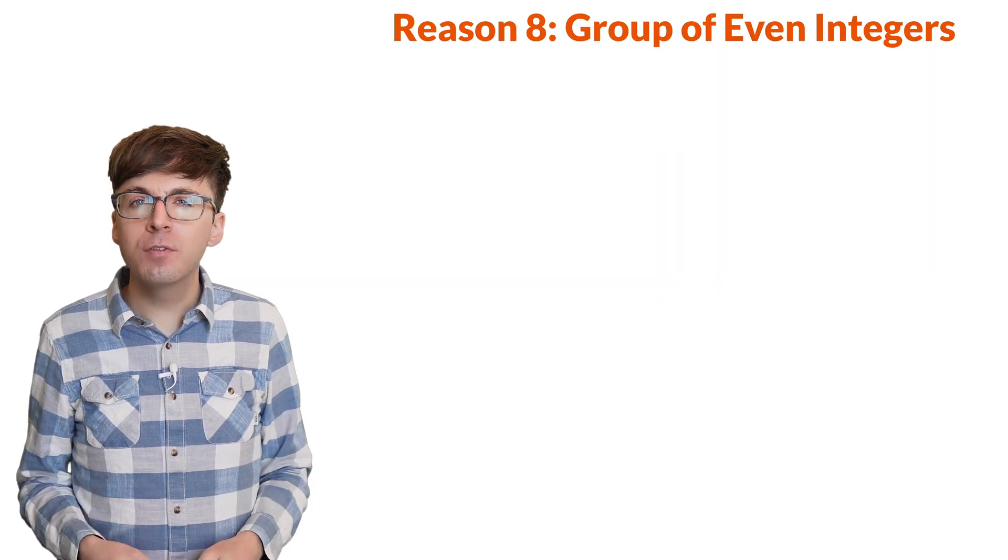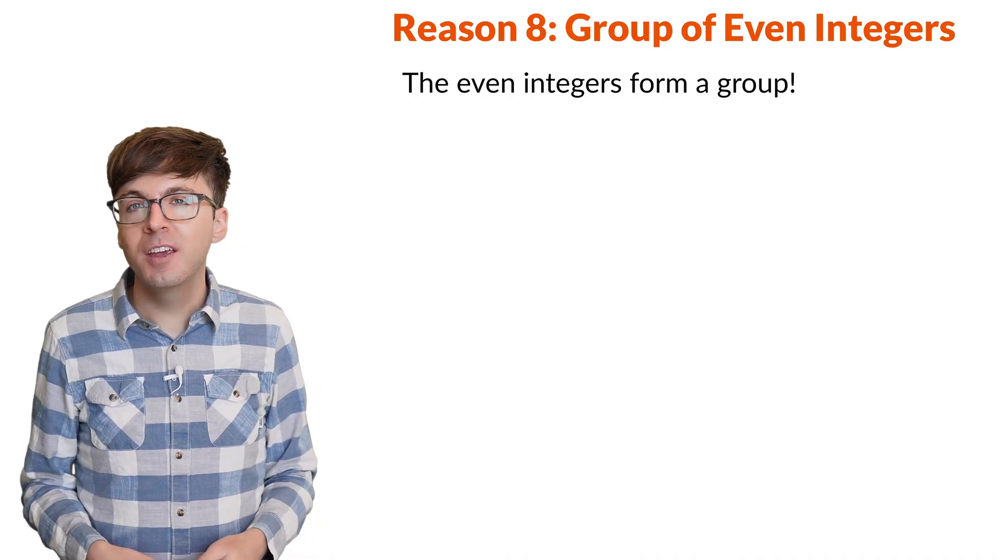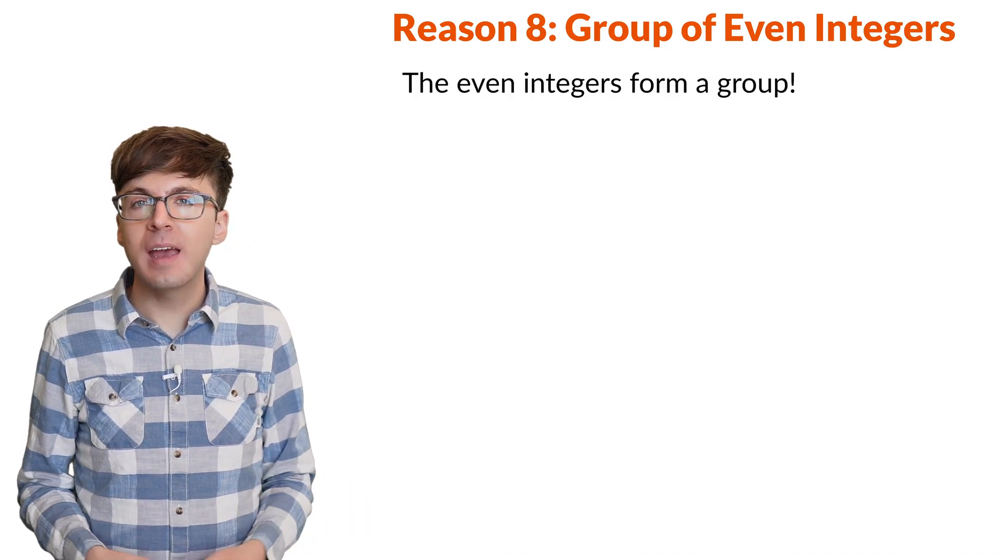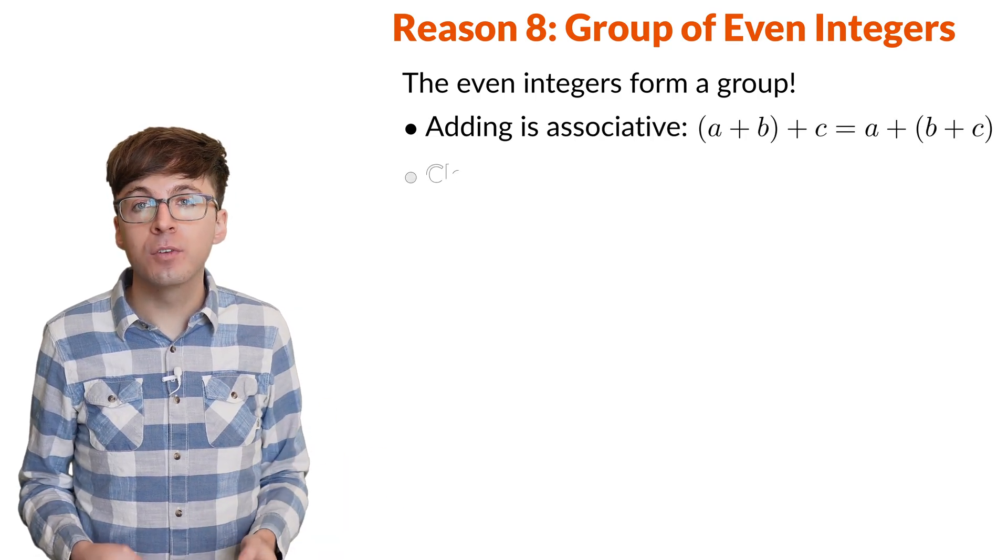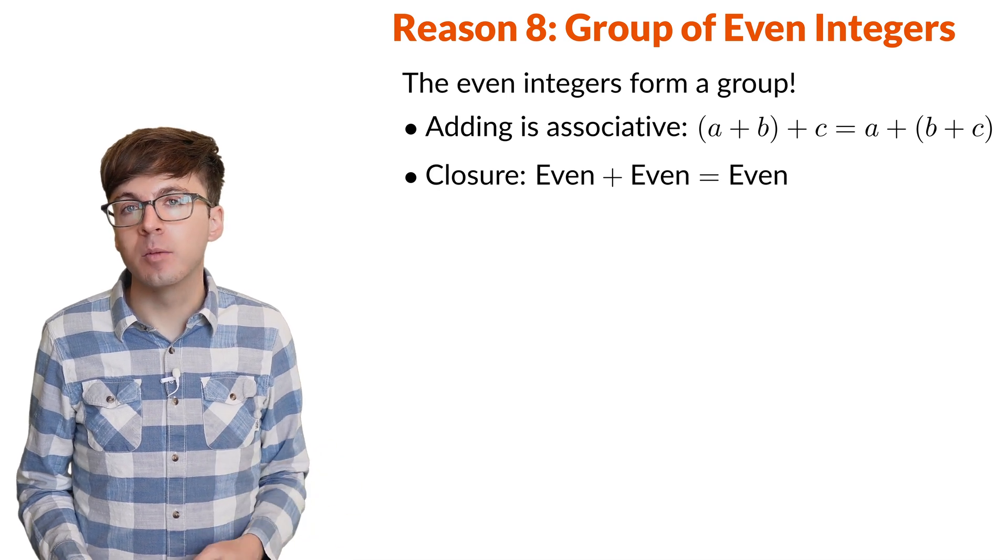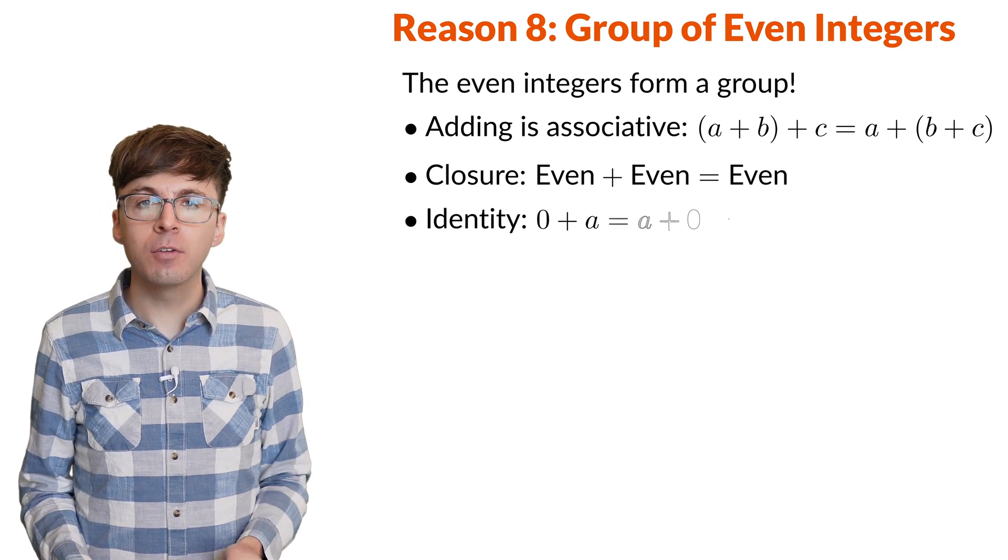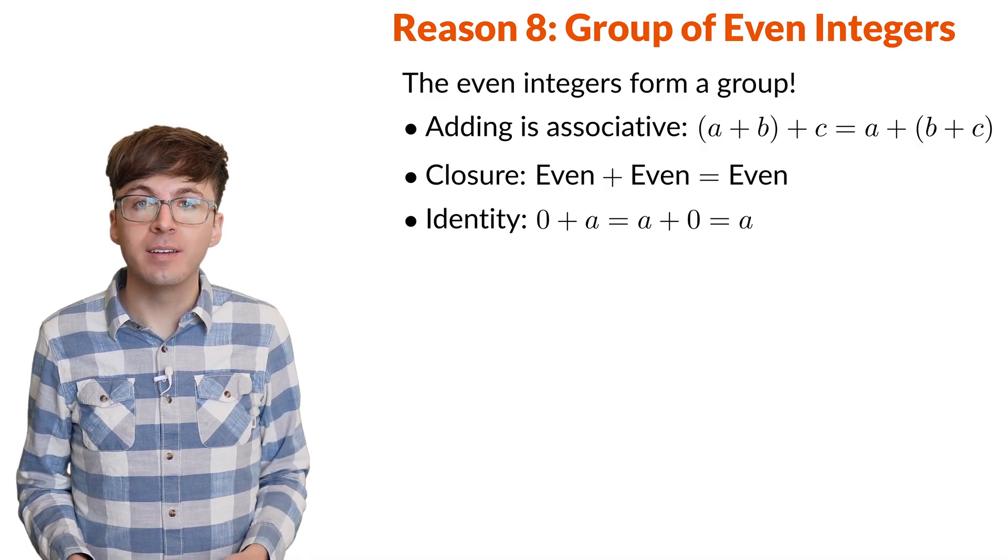Reason 8. The even integers form a mathematical structure called a group under addition. Here are the properties to be a group. Adding even numbers is associative. And adding two even numbers always gives an even number. We also need an additive identity element. An even number that when we add it to any other number, it remains the same. 0 is the additive identity.